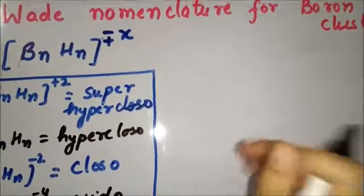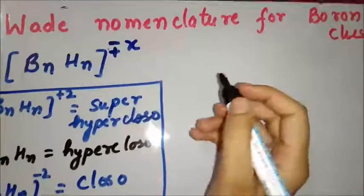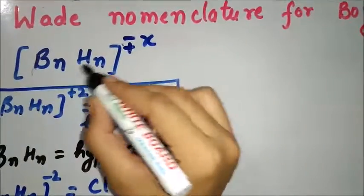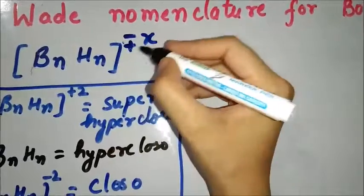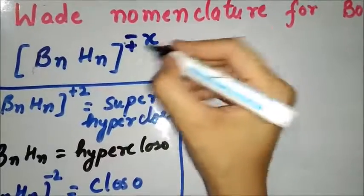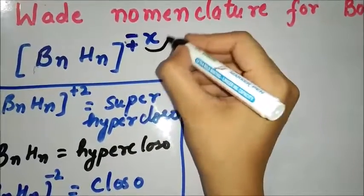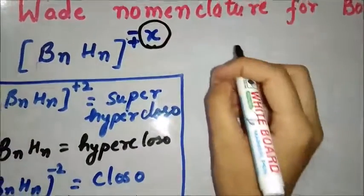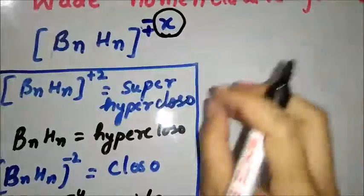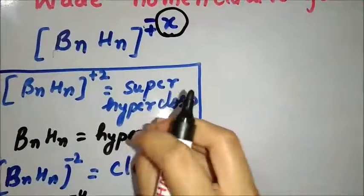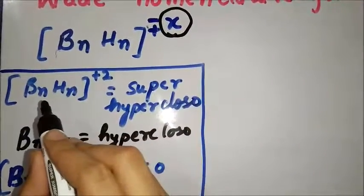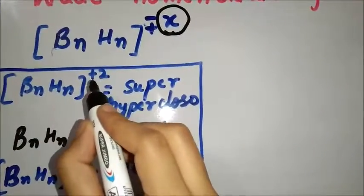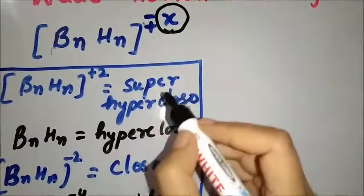Next comes the Wade nomenclature for boron clusters. The general formula for borane is BₘHₙ with charge ±x. For the nomenclature: if the structure is BₙHₙ with charge +2, the structure is super-hypocloso.